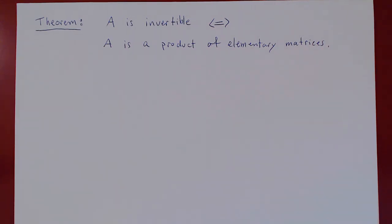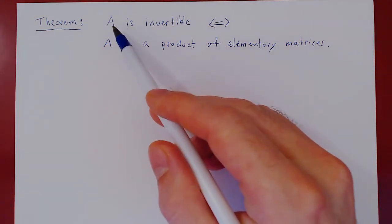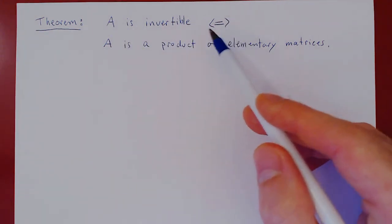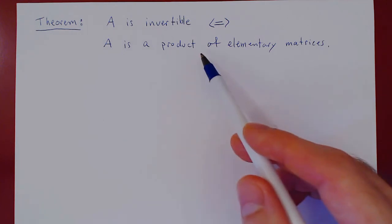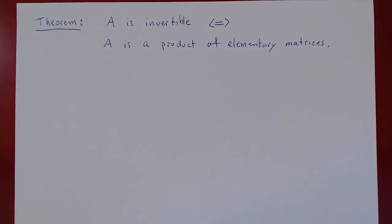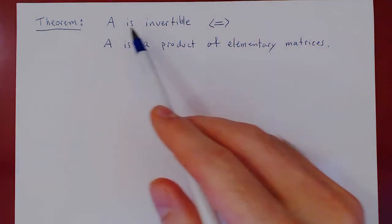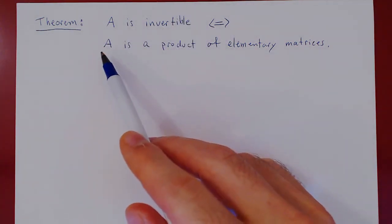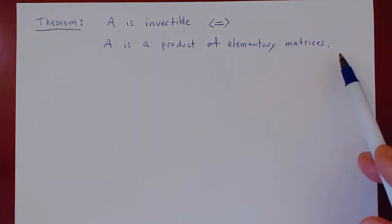Here's the theorem, and this will complete our discussion of elementary matrices. A square matrix A is invertible if and only if A is a product of elementary matrices. Elementary matrices are the building blocks of invertible matrices, just like the prime numbers are the building blocks of integers. So a matrix is invertible only if it can be expressed as a product of elementary matrices.